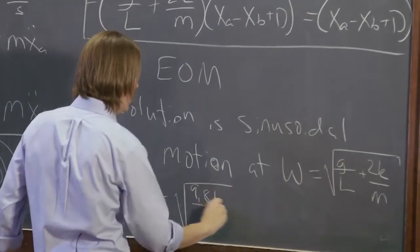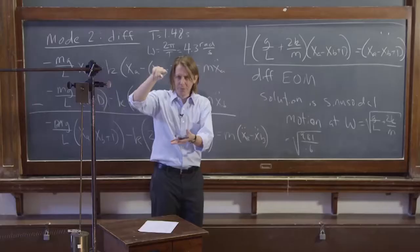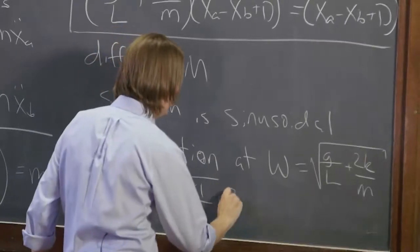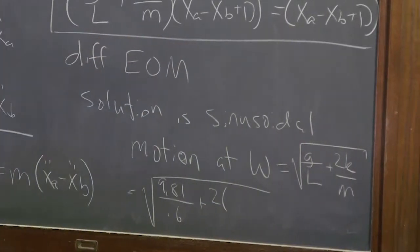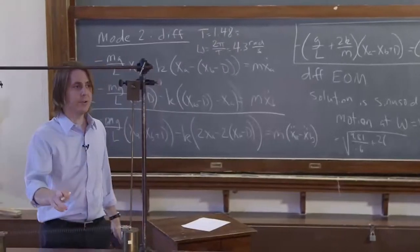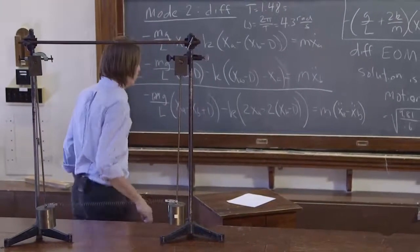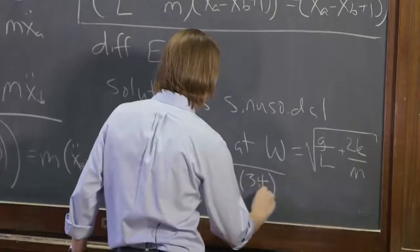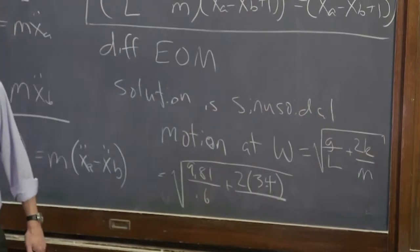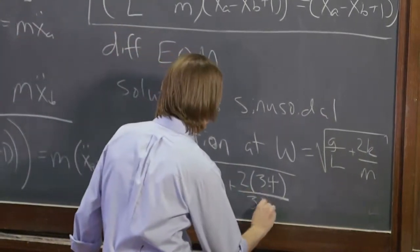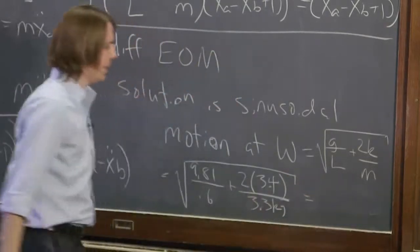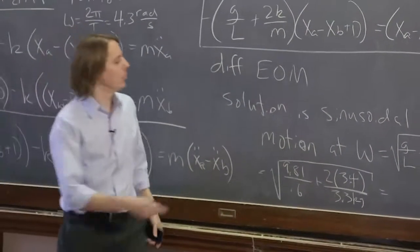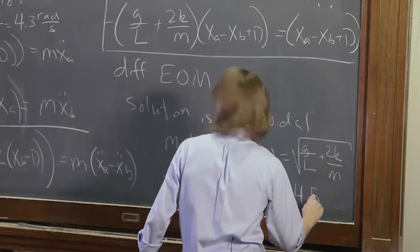Well, then we would look over here and say it's the square root of g over L. So that's 9.81 over 0.6, which, by the way, is the length from the pivot point to the center of mass, about 0.6, plus 2 times the spring constant of this spring, which I haven't told you, but I have measured, and it is 3.4 newtons per meter, plus 2 times 3.4 newtons per meter, over the mass, which I believe is 3.3 kilograms. And if you're looking at that approximately, you realize all these roughly cancel. It's really basically 16 plus 2, roughly 18. You take the square root and you get about 4.5 radians per second.